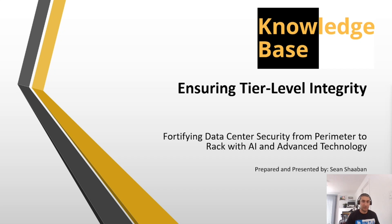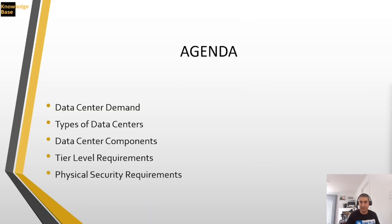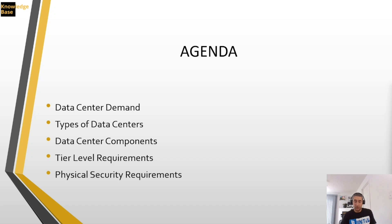I will start by talking about data center demand and how it's growing. Then I'll talk about the types of data centers before discussing the components and systems that form a data center. From there, I will cover the different tier levels from tier one to tier four, the redundancy requirements for each tier, and then jump to security requirements and the latest technologies available to secure a data center from a physical perspective.